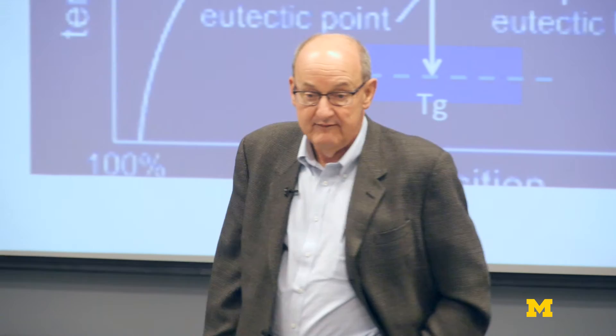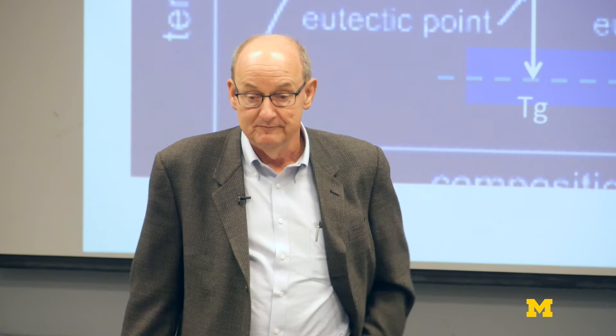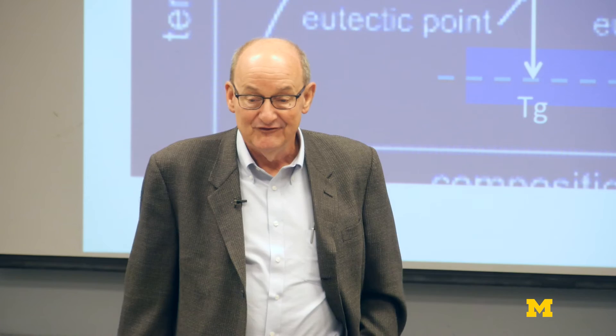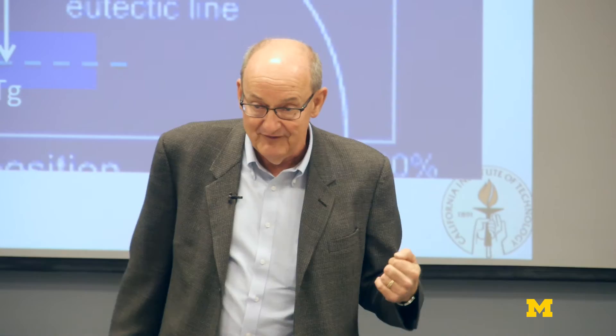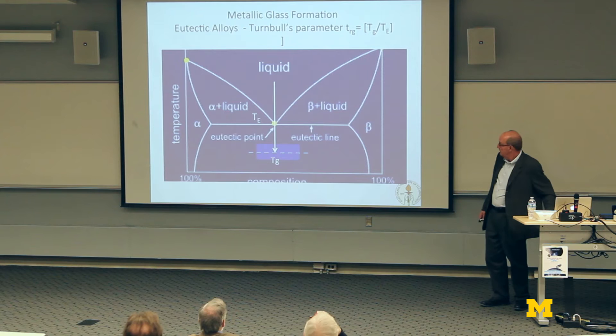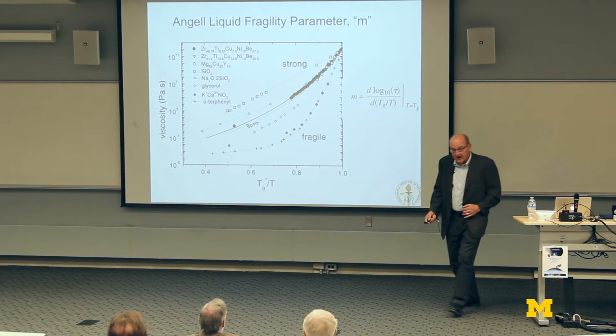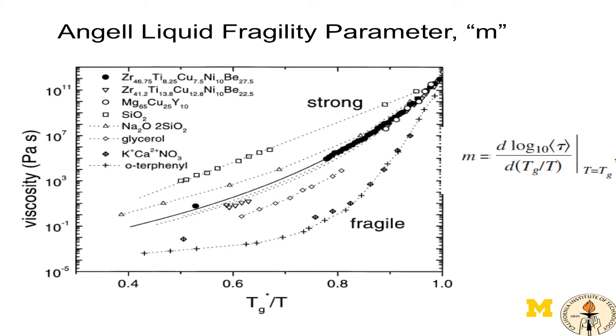Turnbull said 50 years ago: if that ratio is two-thirds, you get bulk glass. Silicate glasses — SiO₂, lime silicates, soda silicates — have Tg/Tm of two-thirds. That's the magic number, the Turnbull criterion. In Vitreloy 1, it's close to two-thirds too, and we get bulk glass. Turnbull's idea that anything will form a glass if you cool it fast is essentially correct, and if that ratio is two-thirds, you don't have to cool it very fast.